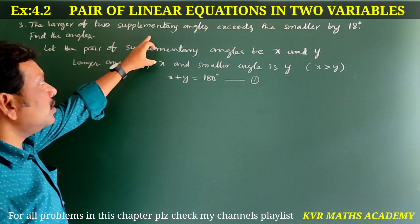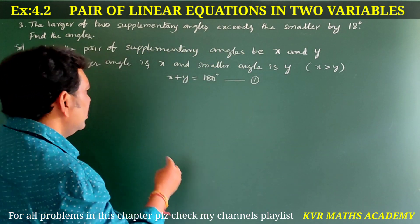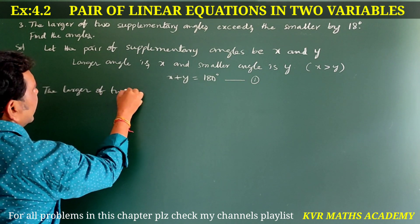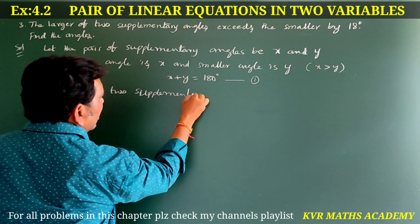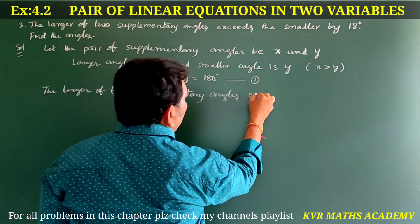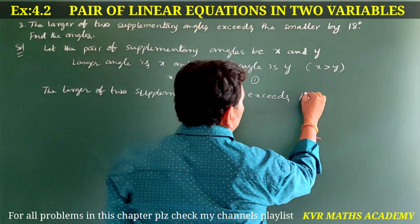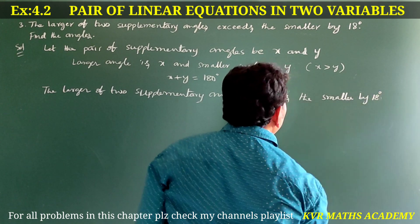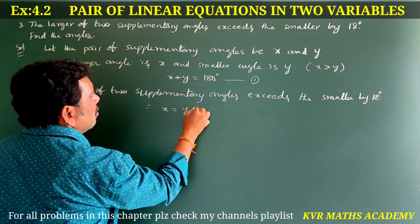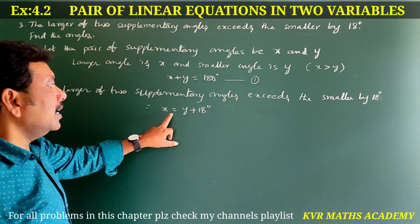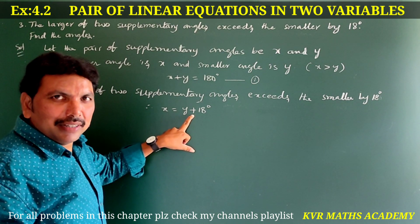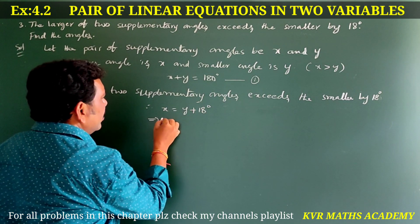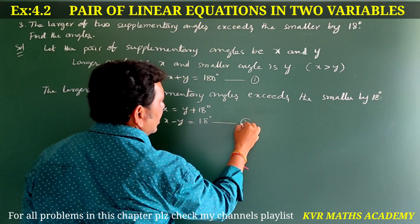From the data, the larger of two supplementary angles exceeds the smaller by 18 degrees. Therefore, x is equal to y plus 18, or equivalently, x minus y is equal to 18. Take this as equation number two.